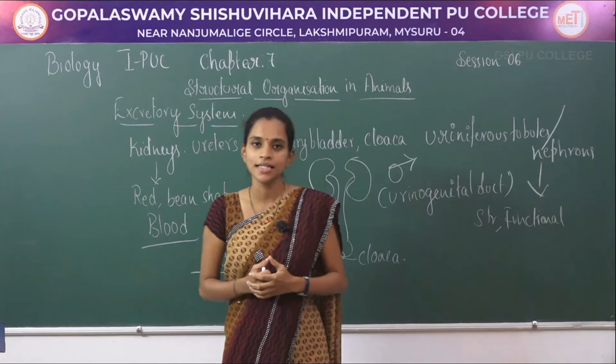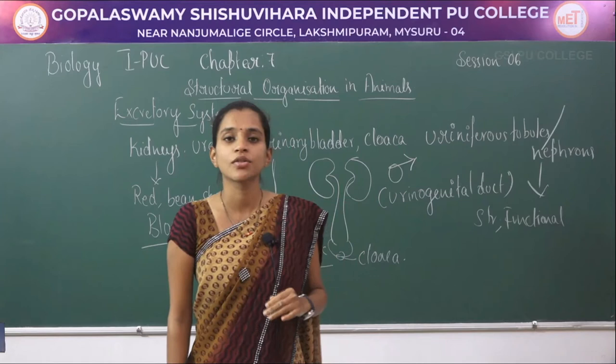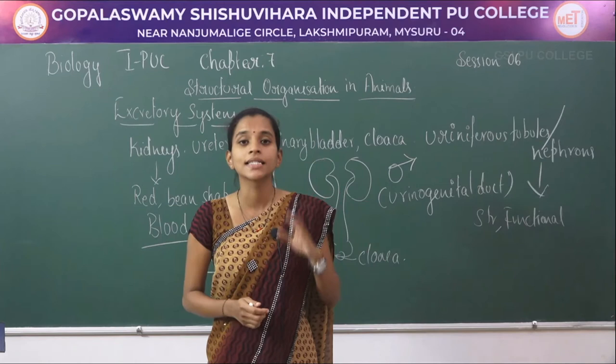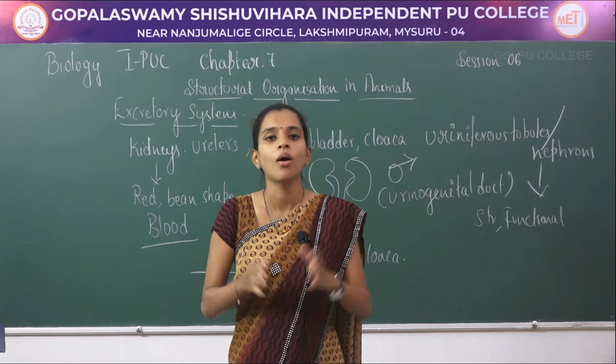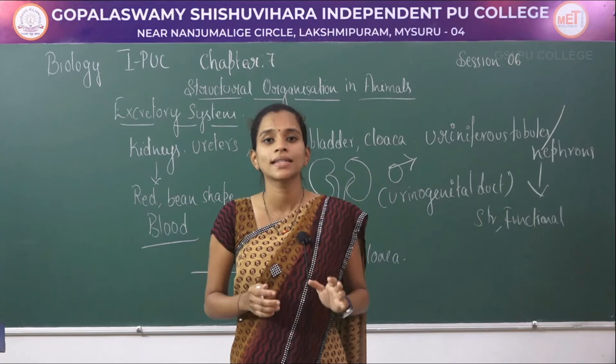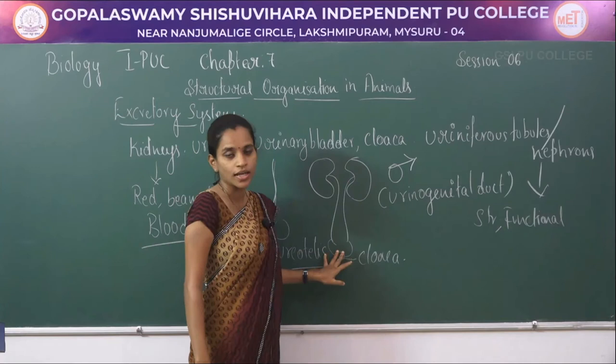To summarize the excretory system of frog: it includes four components — pair of kidneys, ureters, urinary bladder, and cloaca. The kidneys are red colored and bean shaped, present at the base of the vertebral column on either sides in the abdominal region. The kidneys produce two tube-like structures called ureters, connected with the urinary bladder and cloaca.